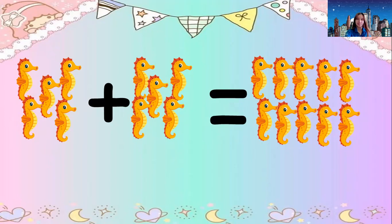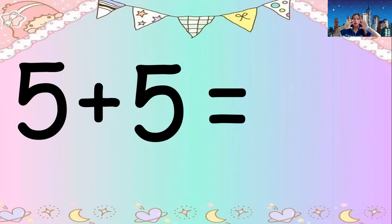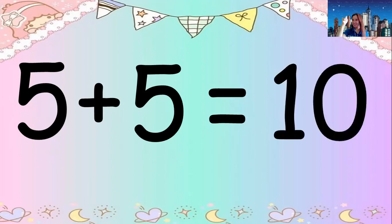Ready your fingers. What number is this? Five. Everybody — five fingers plus five fingers is how many? Let us count: one, two, three, four, five, six, seven, eight, nine, ten. The answer is ten. Very good. Now read it: five plus five equals ten. Great job, everyone.